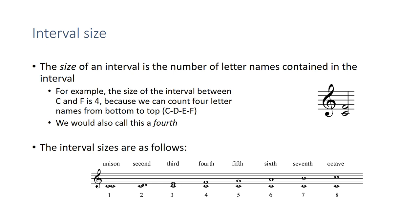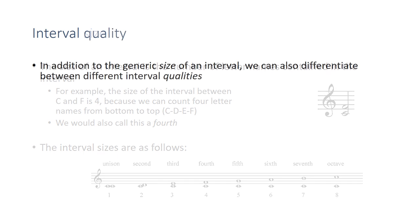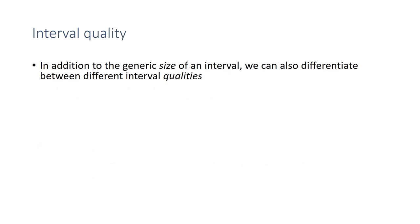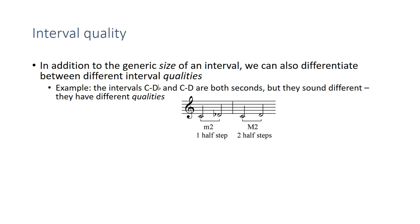In part two of our lesson, we'll talk about intervals larger than an octave. The second part of naming an interval, in addition to its generic size, is the interval's quality. For example, these are two seconds: C to D-flat and C to D. Even though they're both the same generic size — they're both seconds — their quality is not the same.